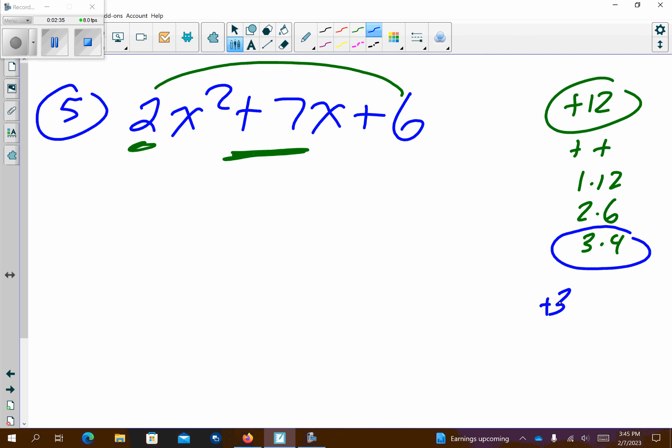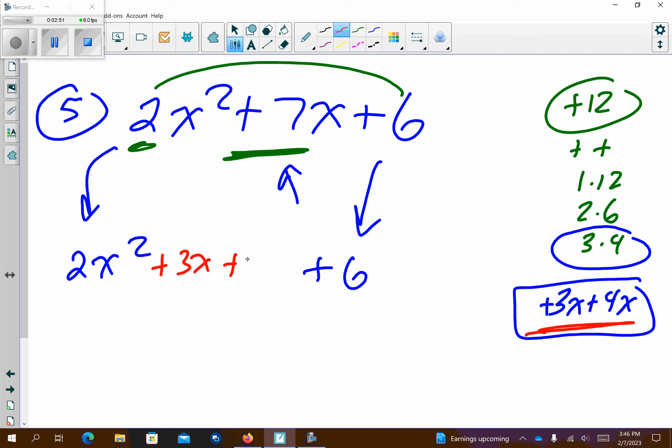So I'm going to have positive 3x and positive 4x, and that's going to be replaced right here. So remember, the ends come down. 2x squared and plus 6 comes straight down. In between them, I'm going to put this. It doesn't matter what order, so I'm just going to put the order I have, plus 3x plus 4x, and then I'm going to start solving this.